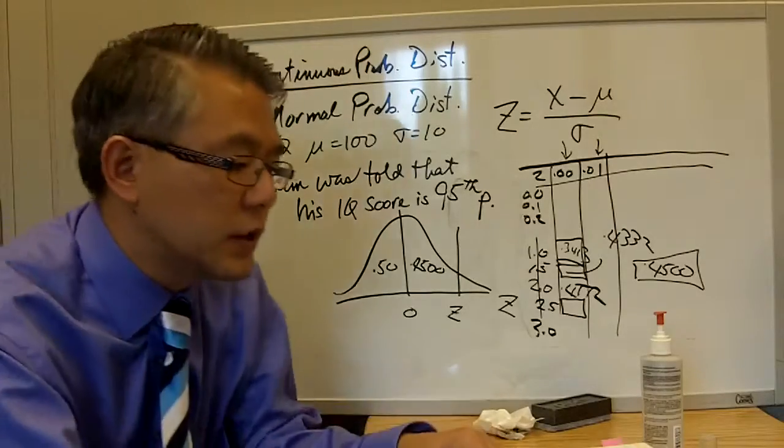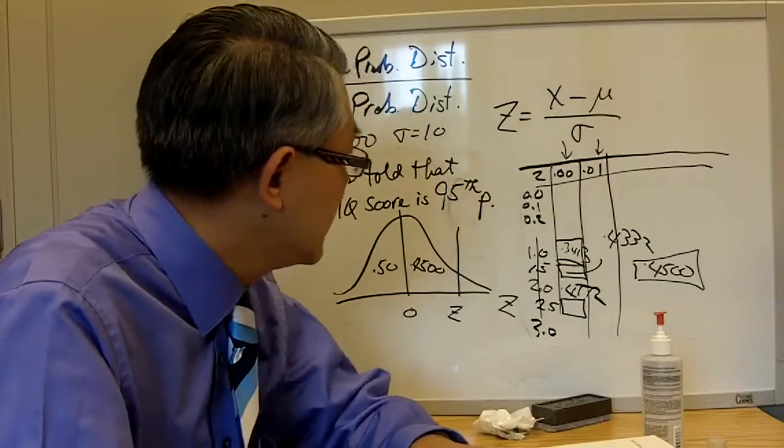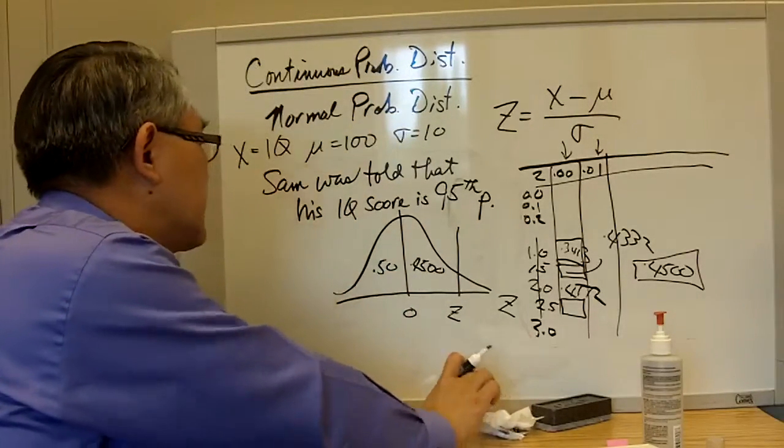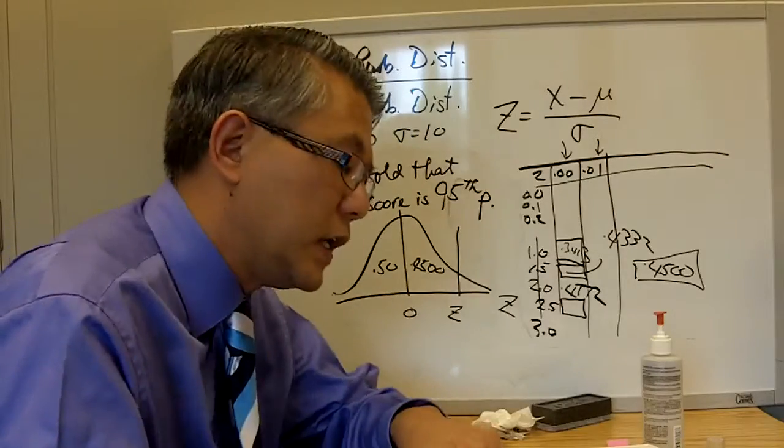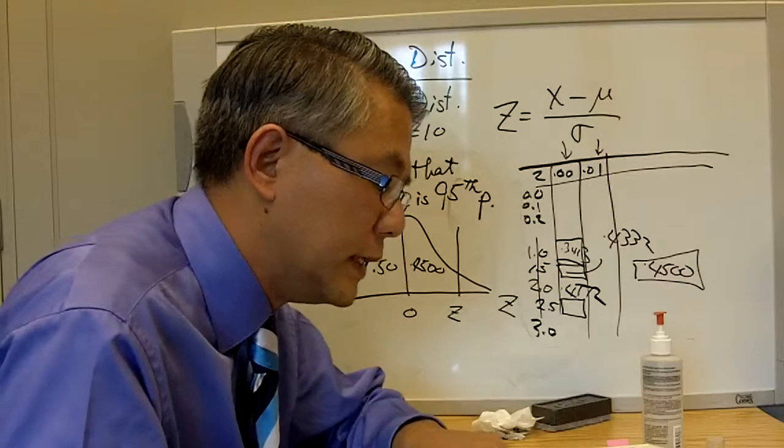So I am going to use the normal table and I have the 95th percentile. Let's see if we have a 0.4500 on that.